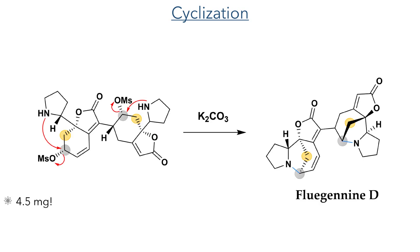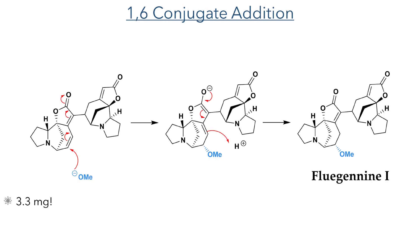The cyclisation of both nitrogen centres completed the synthesis of fluganine D with a final yield of 4.5 milligrams. With fluganine D in hand, it was a simple matter to synthesise fluganine I with a simple conjugate addition of sodium methoxide. While 1,6-conjugate additions are typically quite sluggish and suffer from mixed 1,4-addition along with the desired 1,6-addition, the structure of this molecule does not have other electrophilic sites capable of forming a thermodynamic product, which allowed for the formation of fluganine I with a yield of 3.3 milligrams.